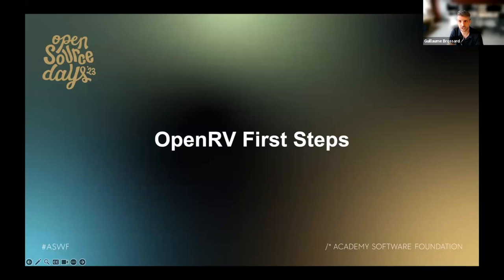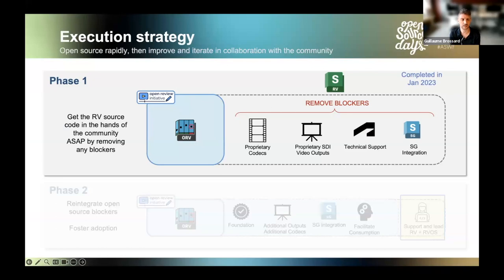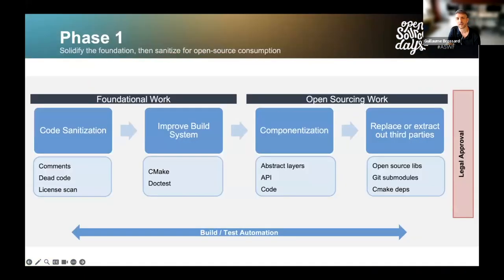Phase one started in September 2022 and was completed by January 2023, allowing us to release OpenRV on January 18th. Overall, phase one was relatively straightforward — RV was the perfect product to open source. The code base was well structured and the plugin architecture meant code was already componentized and isolated. The most technically challenging part was probably modernizing the build system, which was over 10 years old. It took about four months for our development team, and revamping the build system was a major effort.